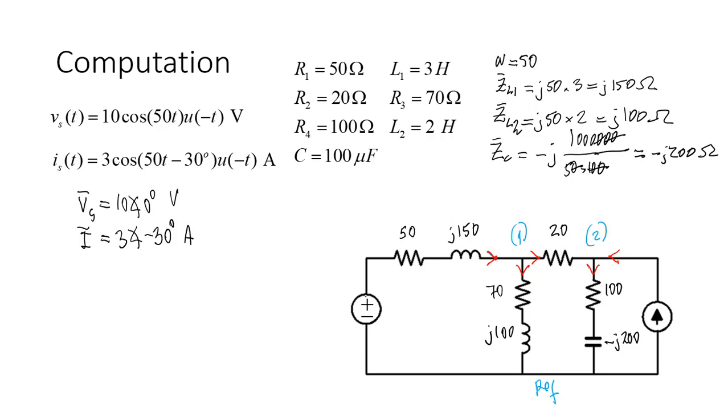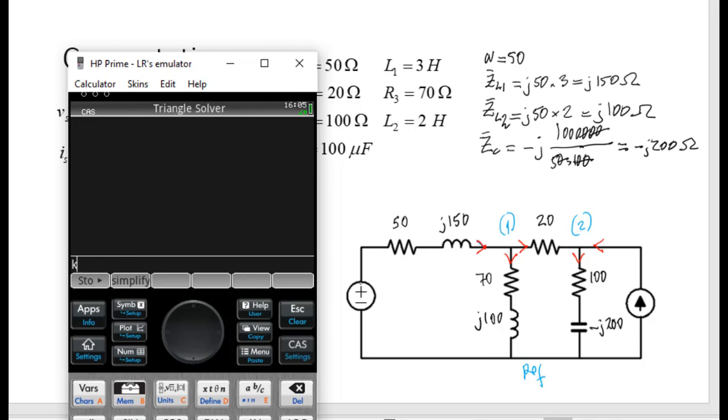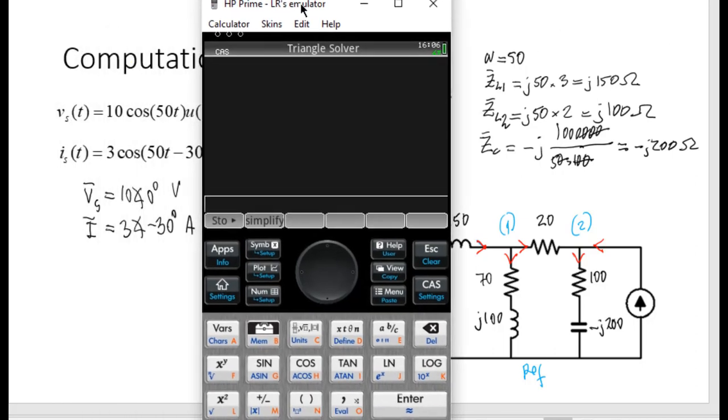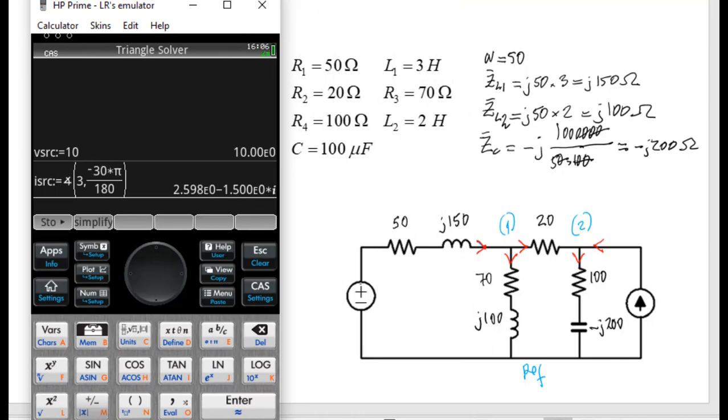Let's write those equations directly on the HP Prime, shall we? KCL one, or let's write that simply as equation one. Well, that equation one is some resource. Let me define V source and I source first. V source is 10. I source is 3 with an angle—I'm working in radians, so I've got to be careful with that—with an angle of -30π/180. So that is a phasor for the current source.